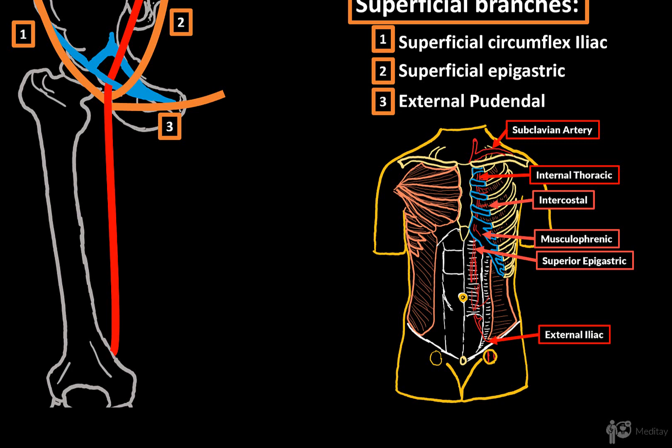Inferiorly, there's the external iliac artery giving off the inferior epigastric artery. So here you see the superior and the inferior epigastric arteries connect.